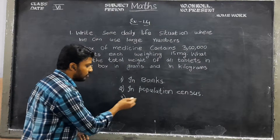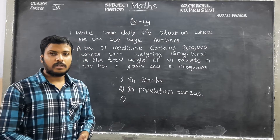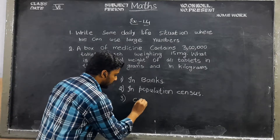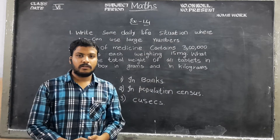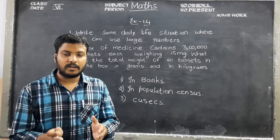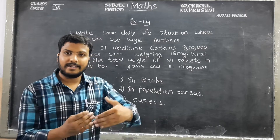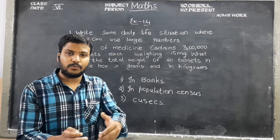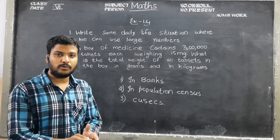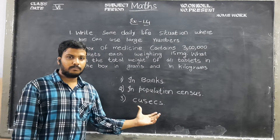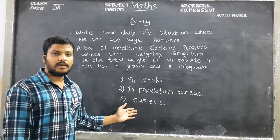And third, where do we use large numbers? For measuring large amounts of volumes — in Q6, which is a reservoir. A lot of water is stored in that reservoir, and when the gates are open, a huge amount of water is released. That amount which is released is measured in Q6 — that is a large number. So especially in banks, in population census, and in Q6, we use large numbers.